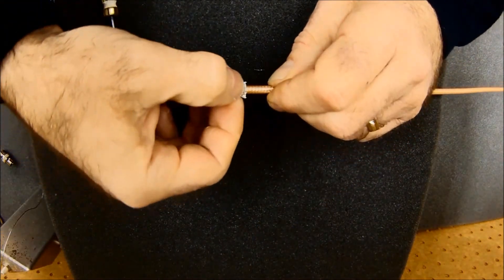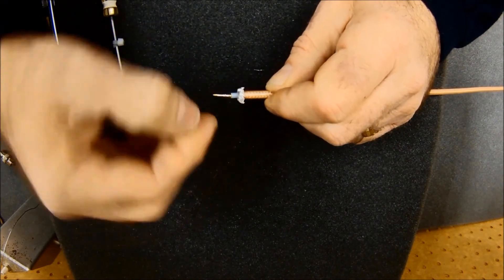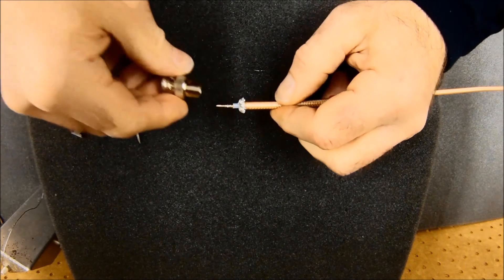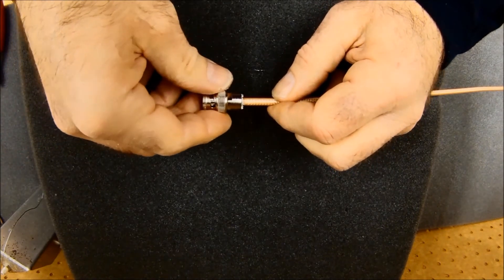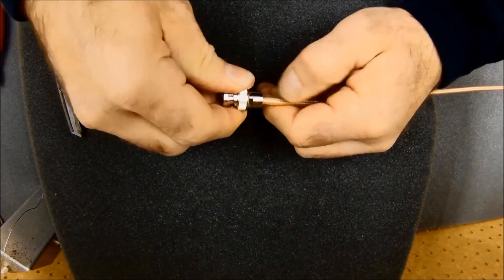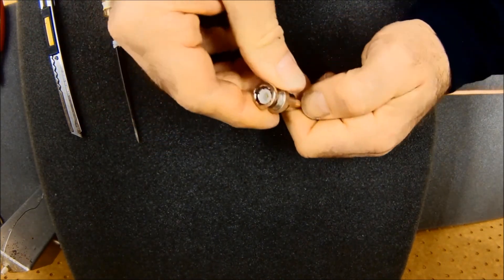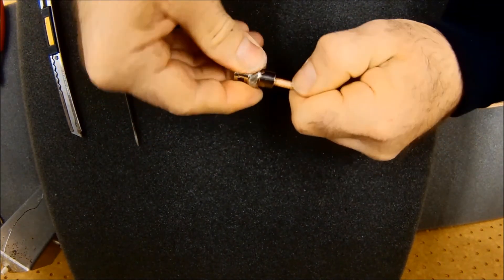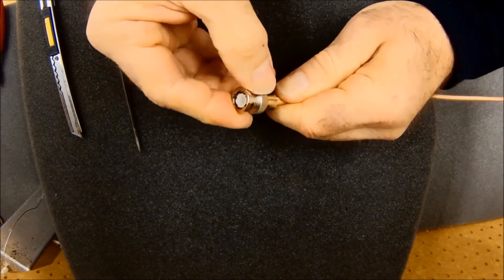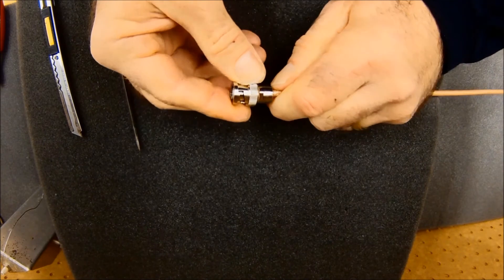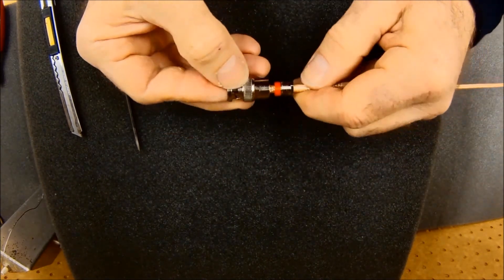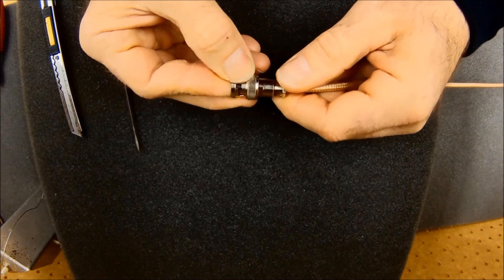Now again I'm going to make sure that I don't have any strands of my braid that are going to short out against this center conductor when I put this together. Push it in there, make sure it's seated all the way. As you can see my center pin comes out roughly flush with the body of the connector. And then the other parts will slide back up on the coax.